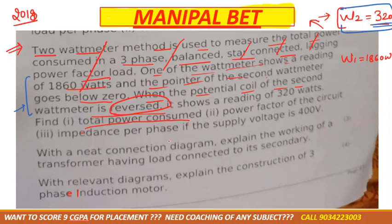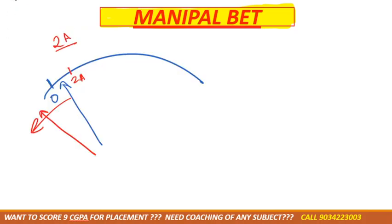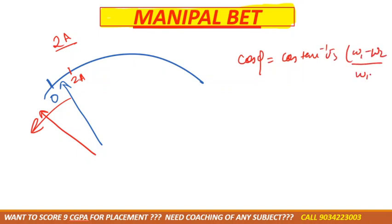Now they have asked: total power consumed, which is W1 plus W2. Power factor uses the formula: tan inverse of root 3 times (W1 minus W2) divided by (W1 plus W2). Put in the values accordingly.